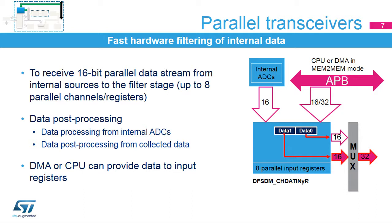Parallel inputs are usually used for fast hardware filtering of internal data from the ADC, or any data collected from a communication peripheral. Data can be written to the DF-SDM parallel input registers by the CPU or the DMA controller configured in memory-to-memory transfer mode. Internal analog-to-digital converters can provide data directly to the DF-SDM parallel input registers.